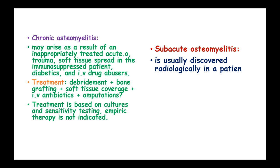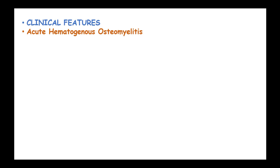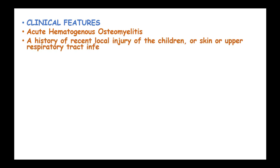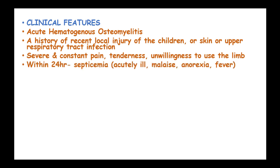Subacute osteomyelitis is usually discovered radiologically in a patient with a painful limb, with no systemic signs and symptoms. In acute hematogenous osteomyelitis, a history of recent local injury of the skin or upper respiratory tract infection is present. Symptoms include severe and constant pain, tenderness, and unwillingness to use the infected limb, and within 24 hours signs of septicemia develop — the patient is acutely ill with malaise, anorexia, and fever.